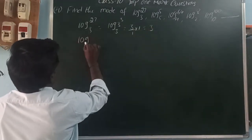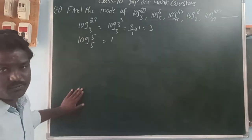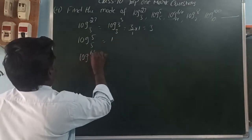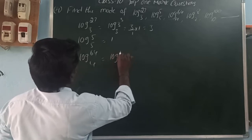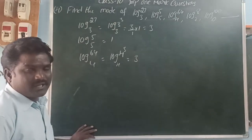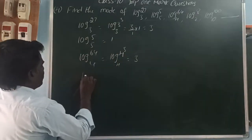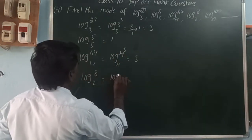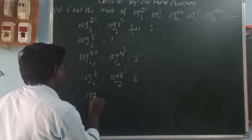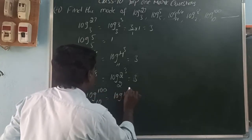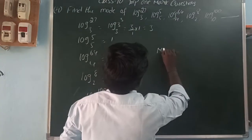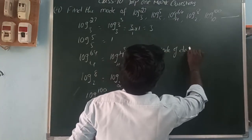Log 64 base 4: write 64 as 4 cubed, so its value is 3. Log 8 base 2: write 8 as 2 cubed, so its value is 3. Log 100 base 10: write 100 as 10 squared, so its value is 2. The observations are 3, 1, 3, 3, 2. The value 3 repeats most, so the mode of the given data is 3.